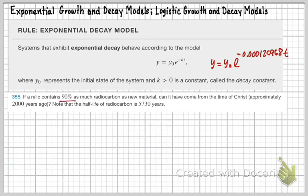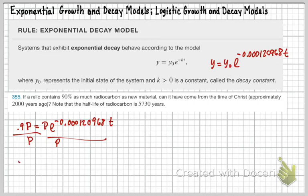Now from there, we can talk about the rest of this problem. To be 90%, that means we would have 0.9 of the original component of p. And this is e to the negative 0.000120968t. And for t, that's what I'm solving for here. First I'm going to divide by p.